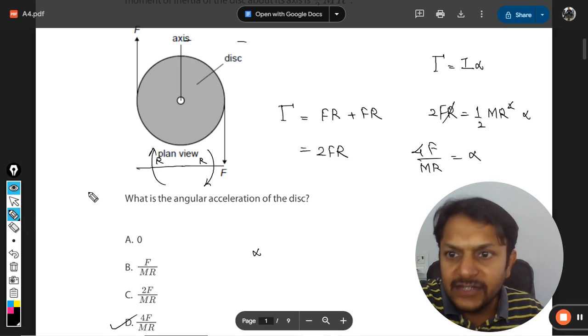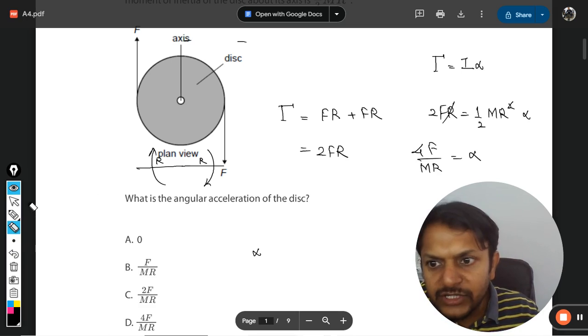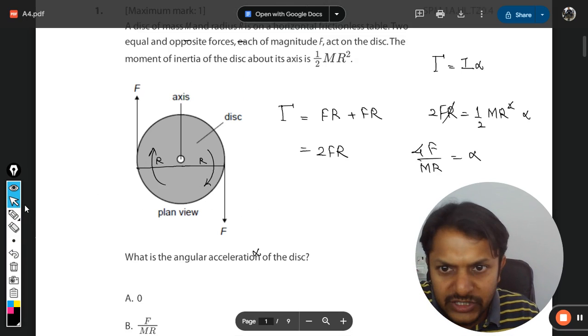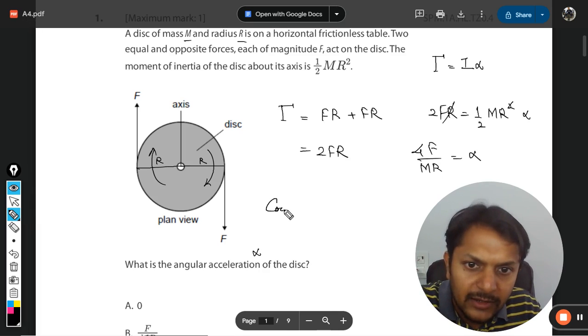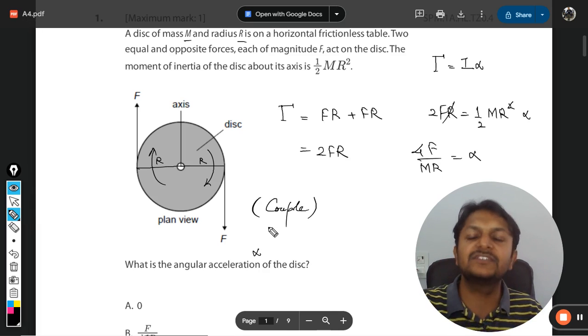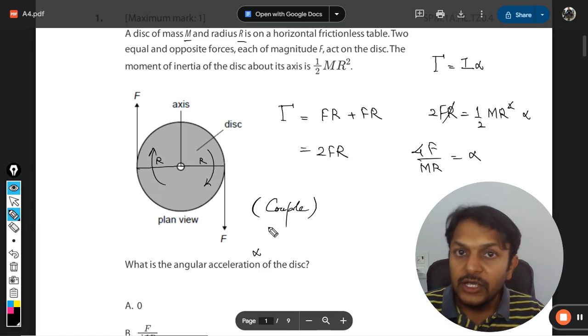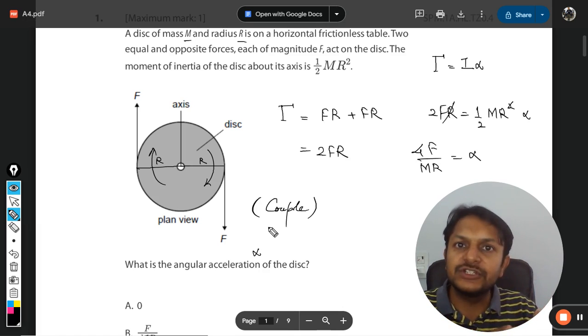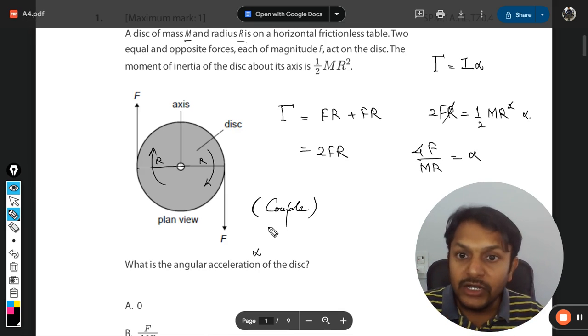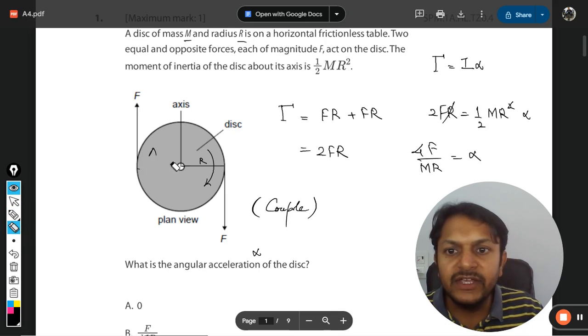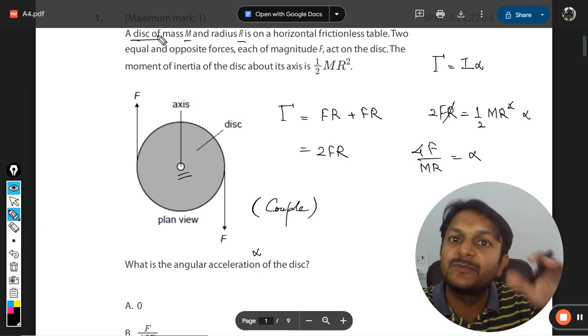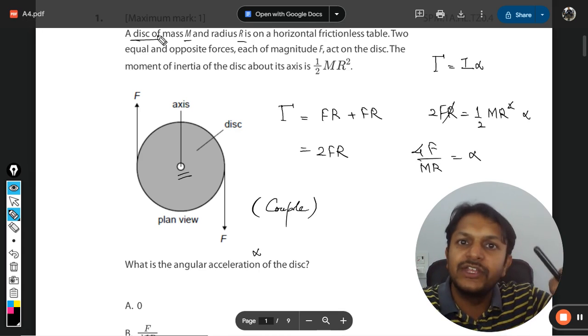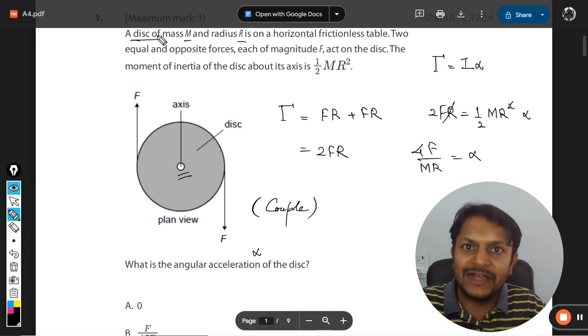You see, there is something called a couple. A couple is a special case of torque when there are two forces which are equal and opposite acting on a body which is not even hinged. This body is not hinged—it's just a disc placed on a table, so there is no hinge point or axis defined. In this case, instead of torque, we usually take the couple.